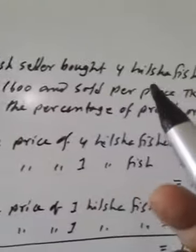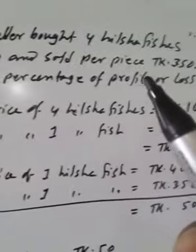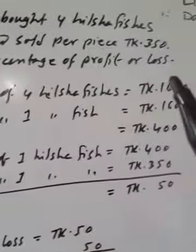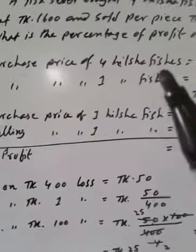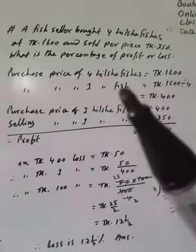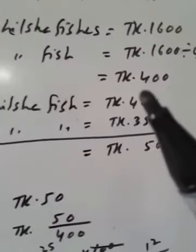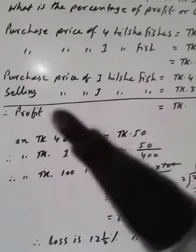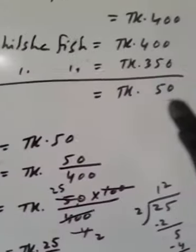A fish seller bought 4 hilcha fishes at Taka 1600 and sold per fish at 350. What is the percentage of profit or loss? Purchase price of 4 hilcha fishes, 1600 Taka. Purchase price of 1 hilcha fish, 400 Taka. Selling price of 1 hilcha fish, 350 Taka. There is loss.